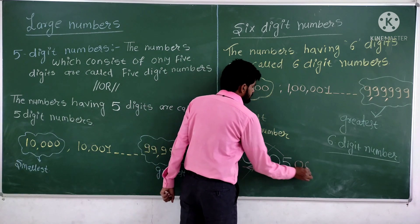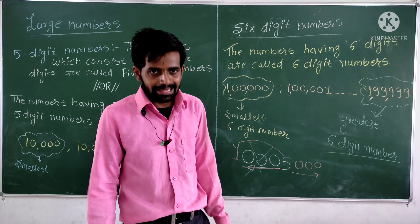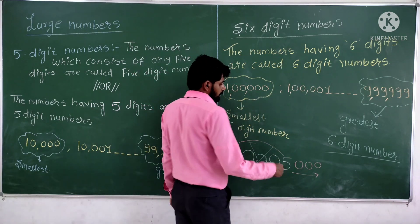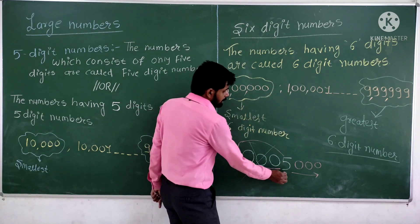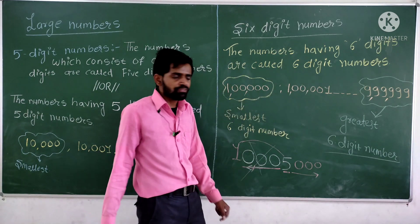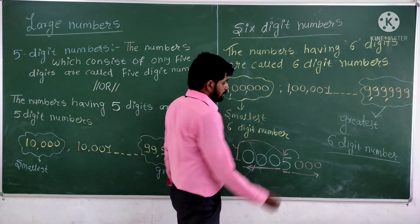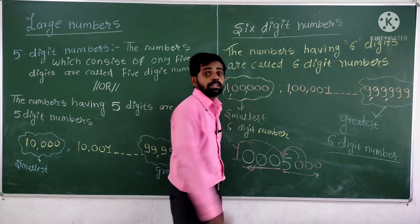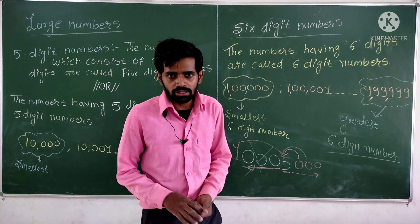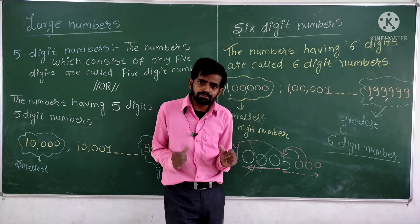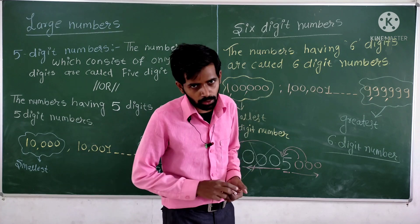If the zero is present towards the right-hand side of the number, the value of the number increases. When you add a zero towards the right-hand side, the non-zero digit shifts to a higher place — for example, from the ones place to the tens place. That means the place value of the digit changes, and if the place value changes, the number changes.